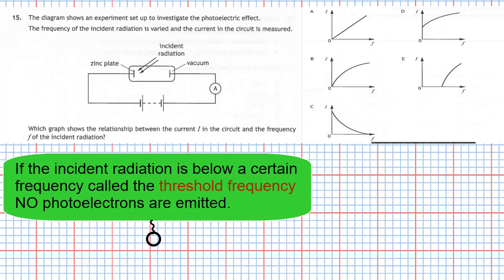Looking at graph A, for all frequencies you'll get photoelectrons emitted and a current — so graph A is wrong. Graph B, once again, for all frequencies you get a photoelectric current — that's wrong. For graph C, for all frequencies you get emitted photoelectrons and a current — wrong. For graph D, for all frequencies you vary you get emitted photoelectrons and a current — that is also wrong.